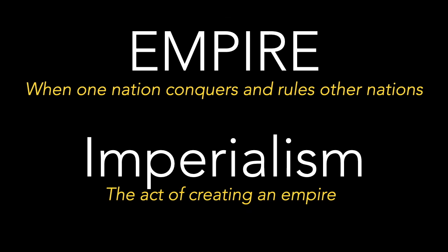Let's start with a couple of terms. First: empire. An empire, by my informal definition, is when one country conquers and rules over other countries. Arguably, the United States has been an empire since early on, when it began conquering Native American nations and absorbing them. You can argue the United States has been an empire since the very beginning. An empire can conquer and rule other nations either directly through military force or by controlling them economically.